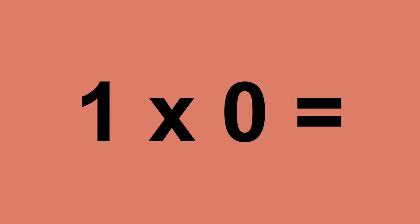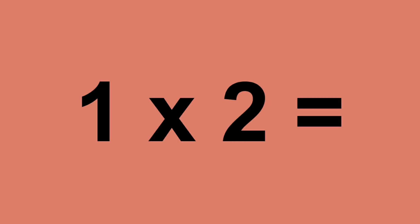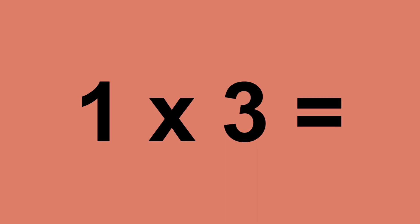One times zero equals zero. One times one equals one. One times two equals two. One times three equals three.